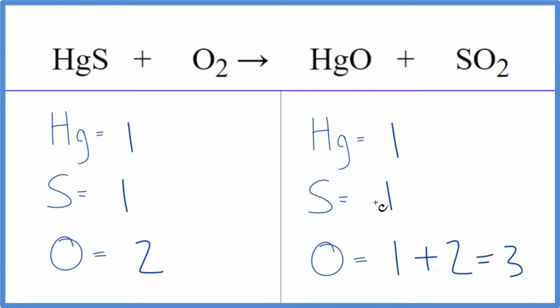So if I put a two in front of the HgO, I'll have one times two, so I'll have two mercury atoms. And then the oxygens we need to update those: two times one is two, plus these two here, that'll give us four. So we have an even number.